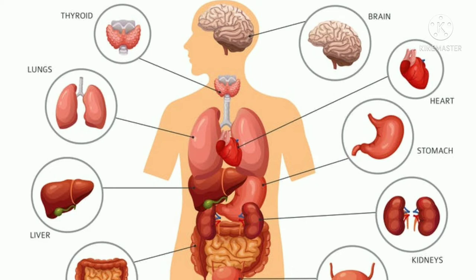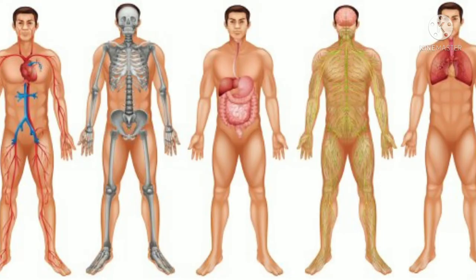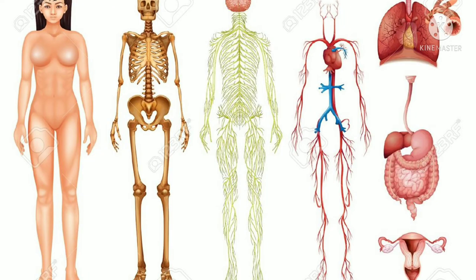Examples of organs include the heart, liver, kidney, and brain. You can see in this slide all the organs present in a human body — the thyroid, brain, and heart are all organs. A group of tissues performs several functions to form an organ, and a group of organs performs specific functions to form an organ system. The functions performed by different groups of cells in a multicellular organism is called division of labor.